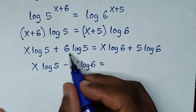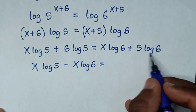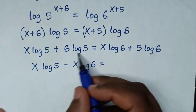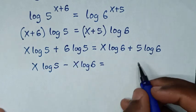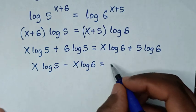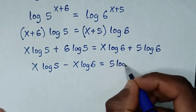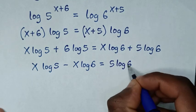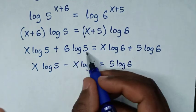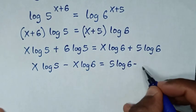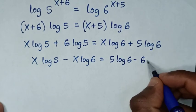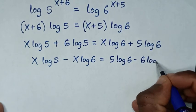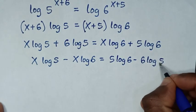...we'll place the constants on one side, so it will be 5 log of 6 minus 6 log of 5.